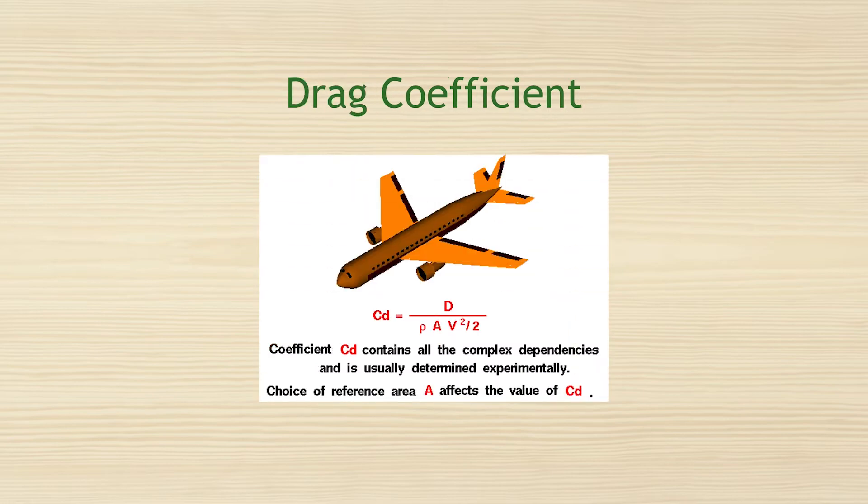The drag coefficient, which is non-dimensional and is employed in fluid dynamics, is a measurement of an object's drag or resistance in a fluid environment like air or water. A lower drag coefficient means the object will have less aerodynamic or hydrodynamic drag, which is used in the drag equation.